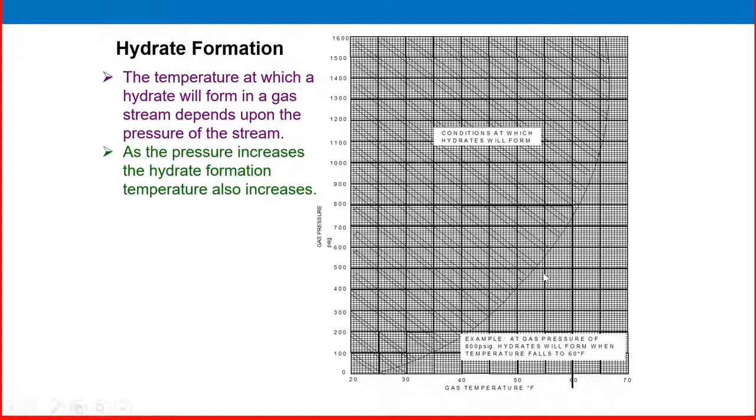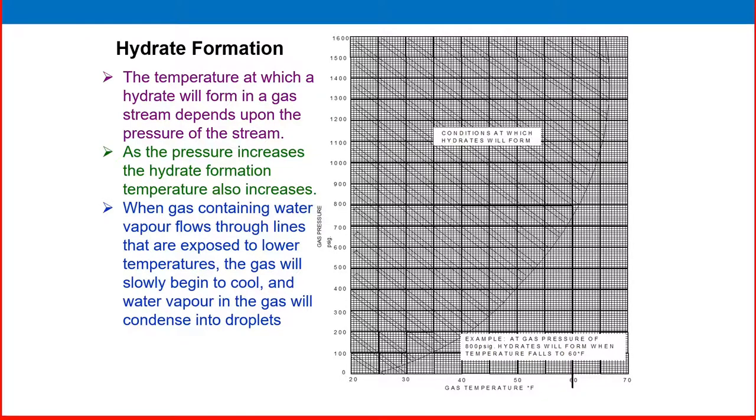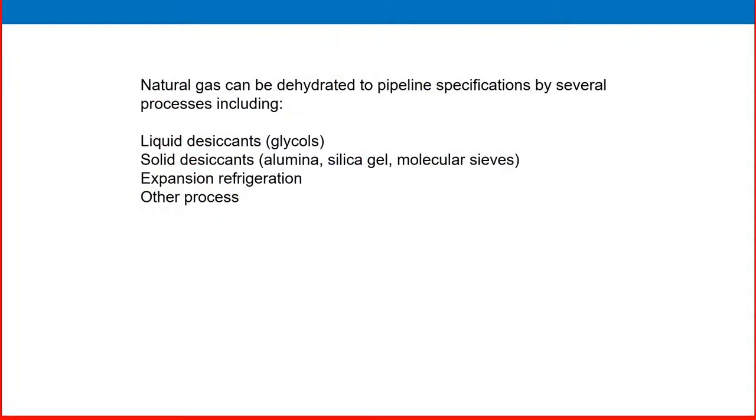As the pressure increases, the hydrate formation temperature also increases. If the pressure increases to 900 psi, then the hydrate formation temperature will also increase. If you increase the pressure, you can go up to 66 or 67 or 70 degrees. When gas containing water vapor flows through lines that are exposed to lower temperature, at the same pressure, if temperature comes to 40 or 50 or 55 degrees, the gas will slowly begin to cool and water vapor in the gas will condense into droplets. The same pressure and temperature coming to 55, then see the same pressure hydrate formation starts. This is the explanation to understand how hydrate formation is starting.